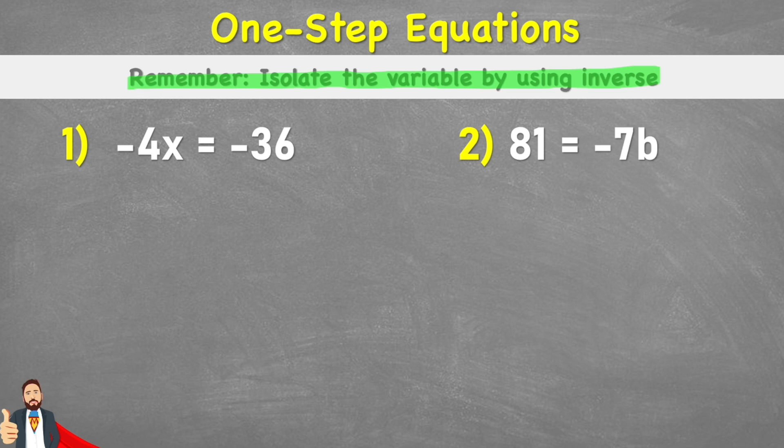So what is the variable? Well, the variable is this unknown value just here, represented by an x. And if we read our whole equation, we have negative 4x equals negative 36. So because we have this value connected to our variable, with no symbol between it, we know that we must use multiplication. So negative 4x means negative 4 times x.